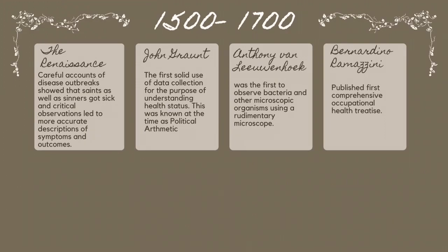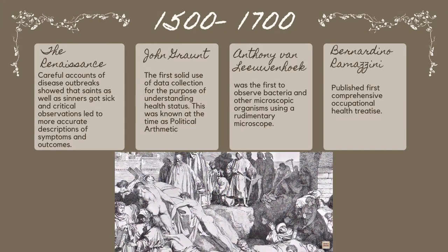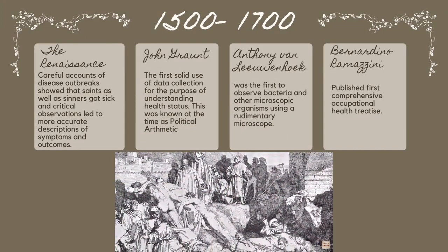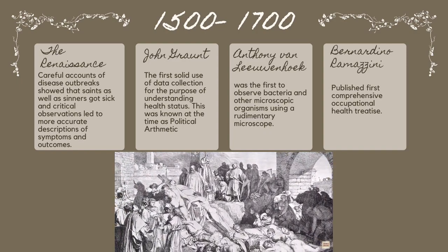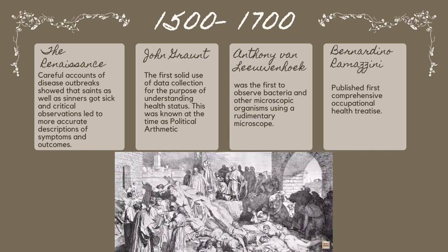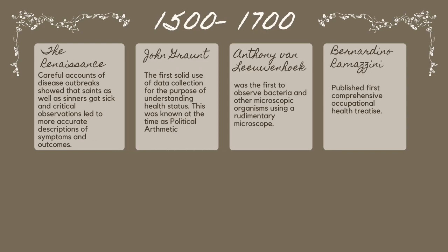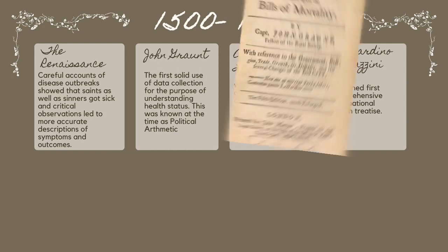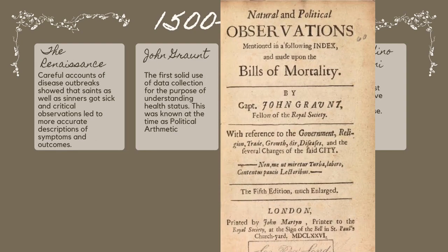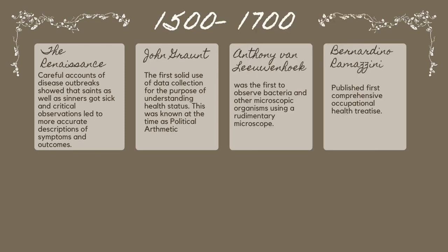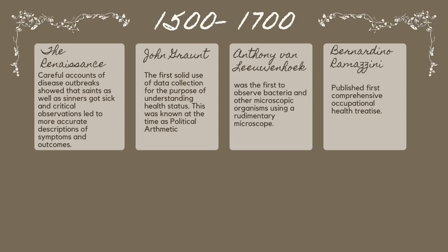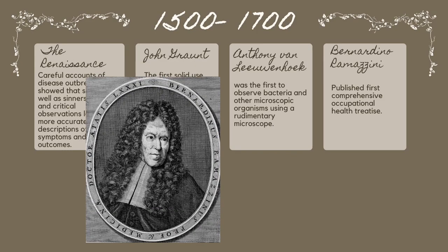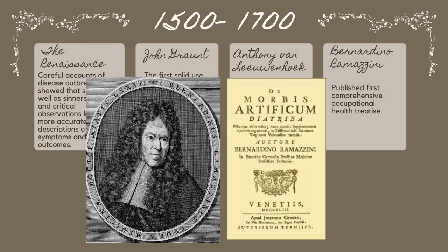1500 to 1700 — The Renaissance. Careful accounts of disease outbreaks showed that saints as well as sinners got sick, and critical observations led to more accurate descriptions of symptoms and outcomes. John Graunt provided the first solid use of data collection for the purpose of understanding health status. Anthony van Leeuwenhoek was the first to observe bacteria and other microscopic organisms using a rudimentary microscope. Bernardino Ramazzini published the first comprehensive occupational health treatise.